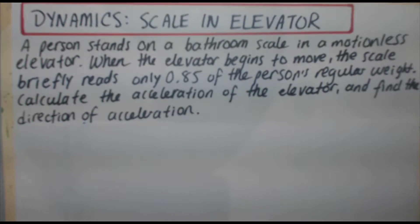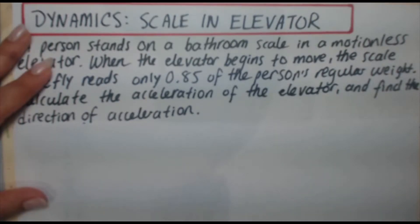So the first thing I would suggest with these types of problems is draw a free body diagram. That way you look at all the forces acting on the person, and this then allows you to go into F_net equals ma, Newton's second law. Okay, so your free body diagram should look something like this.